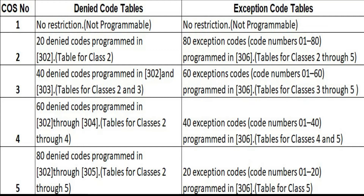We need to assign class of service first. COS1 grants the highest level of authorization, allowing all outside CO line calls to be made. COS5 grants the lowest level of authorization. COS2 through COS5 are used to restrict calls with a combination of program denied code tables.